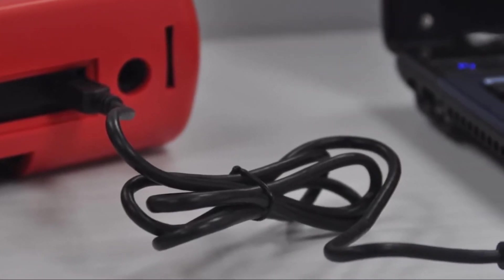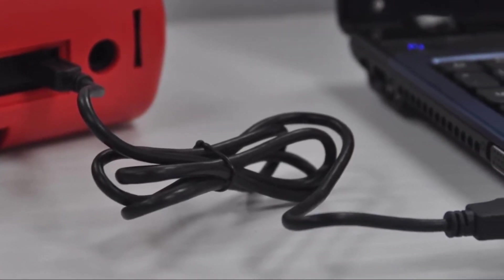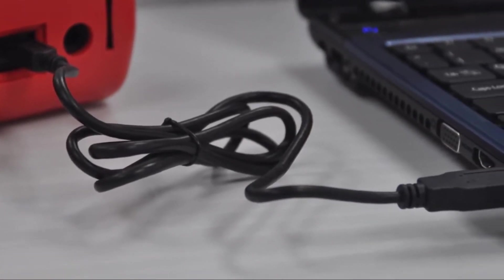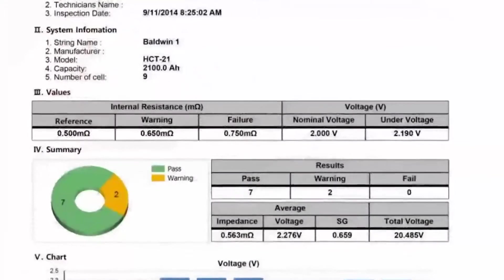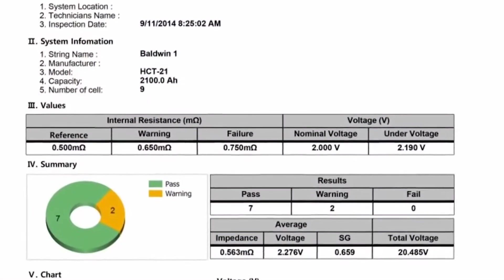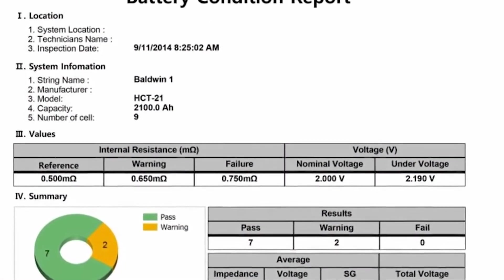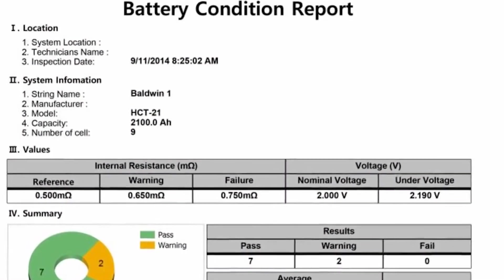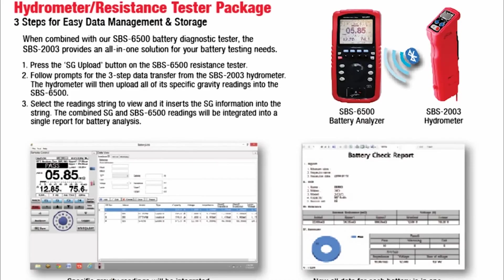The SPS6500 connects to a PC via USB to create custom graphical reports in PDF, Excel, or Word formats. The SPS6500 will also directly import specific gravity readings from an optional SPS2003 digital hydrometer.